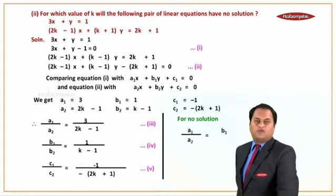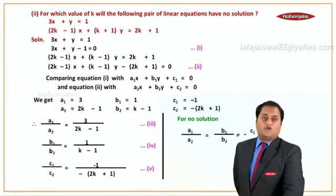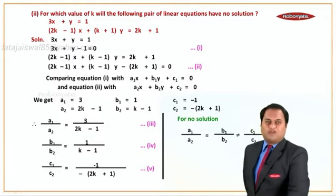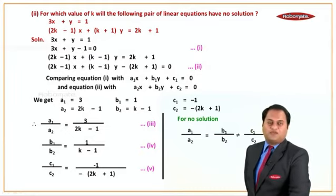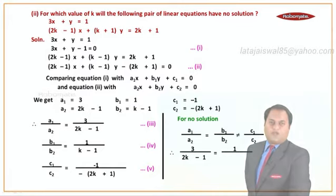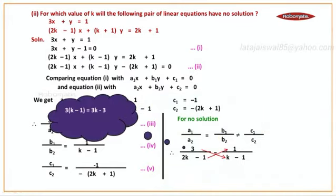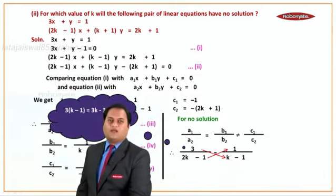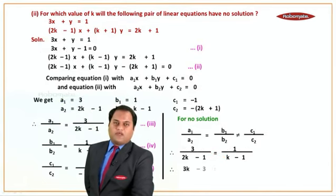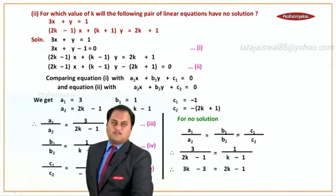For no solution the condition is: a1 upon a2 equals b1 upon b2, but definitely not equal to c1 upon c2. Substituting the values: 3 upon 2k minus 1 equals 1 upon k minus 1. The c1 upon c2 part is not required. Cross-multiplying, we get 3 into k minus 1 equals 3k minus 3, and 1 into 2k minus 1.